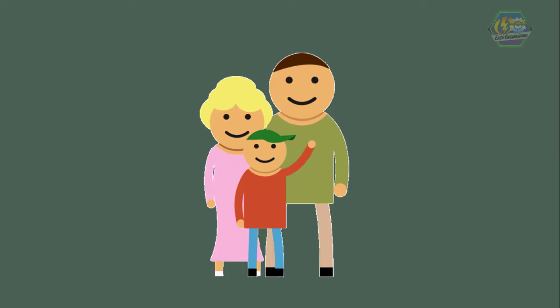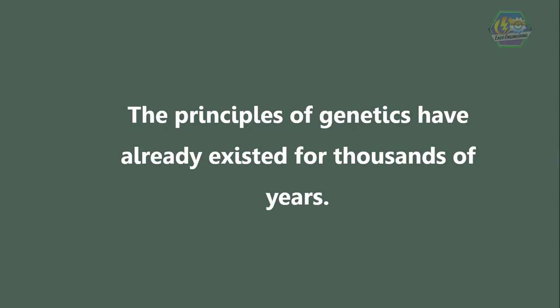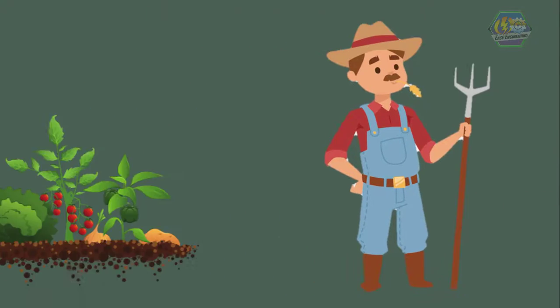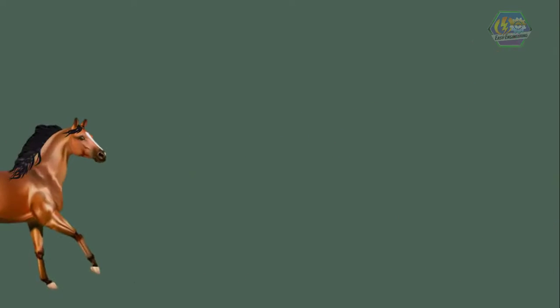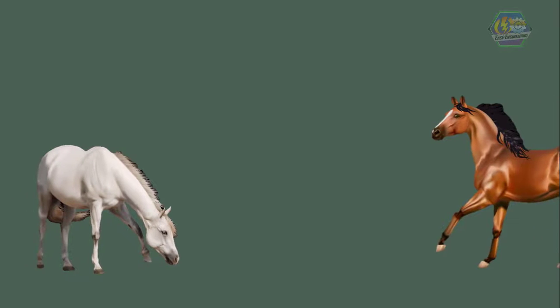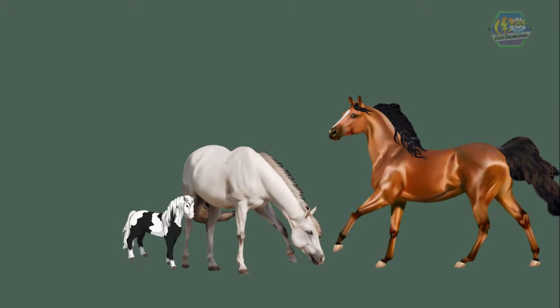We haven't noticed it, but the principles of genetics have already existed for thousands of years. For example, some farmers trying to cultivate more delicious crops, or horse breeders who want to raise faster horses, are already practicing genetics. They would only select the best horses in each generation and let them mate — the offspring now have the combined genes of their parents.